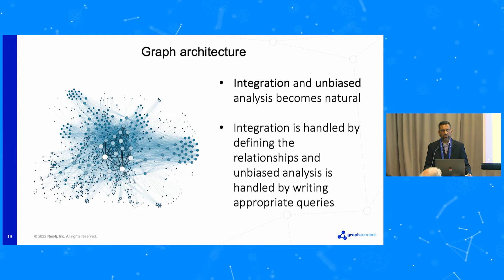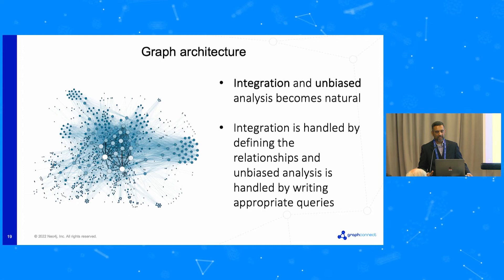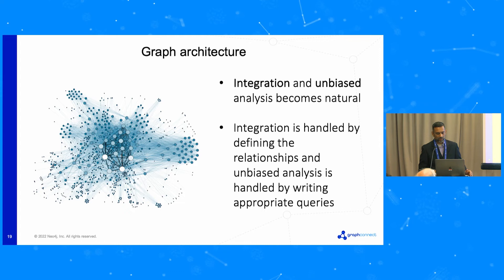Obviously, graph architecture comes as an integrative framework for studying systems medicine. About graphs — integration and unbiased analysis become very natural. Integration is handled by defining relationships. As soon as you define a relationship, there is integration. Unbiased analysis is handled by writing appropriate queries. A graph is a natural structure for systems biology, and in fact I would say it's a defining aspect of systems thinking that people often miss. You cannot separate complex adaptive systems and graphs — they go hand in hand, along with emergent phenomena.